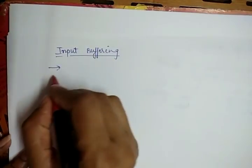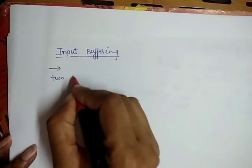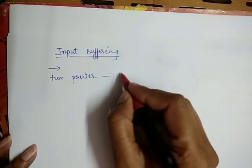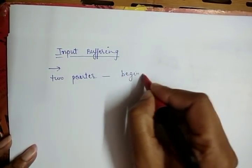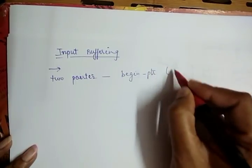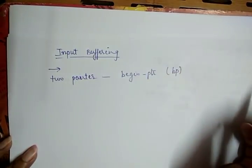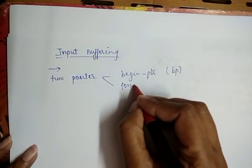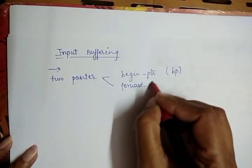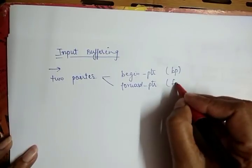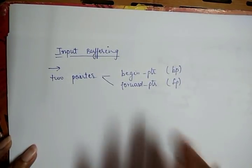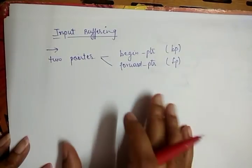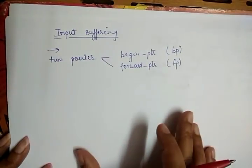Here we use two pointers in the input buffer. One is the begin pointer, represented as BP, and the second pointer is the forward pointer, represented by FP. These two pointers — begin and forward — are used to keep track of the portion of the input scanned.